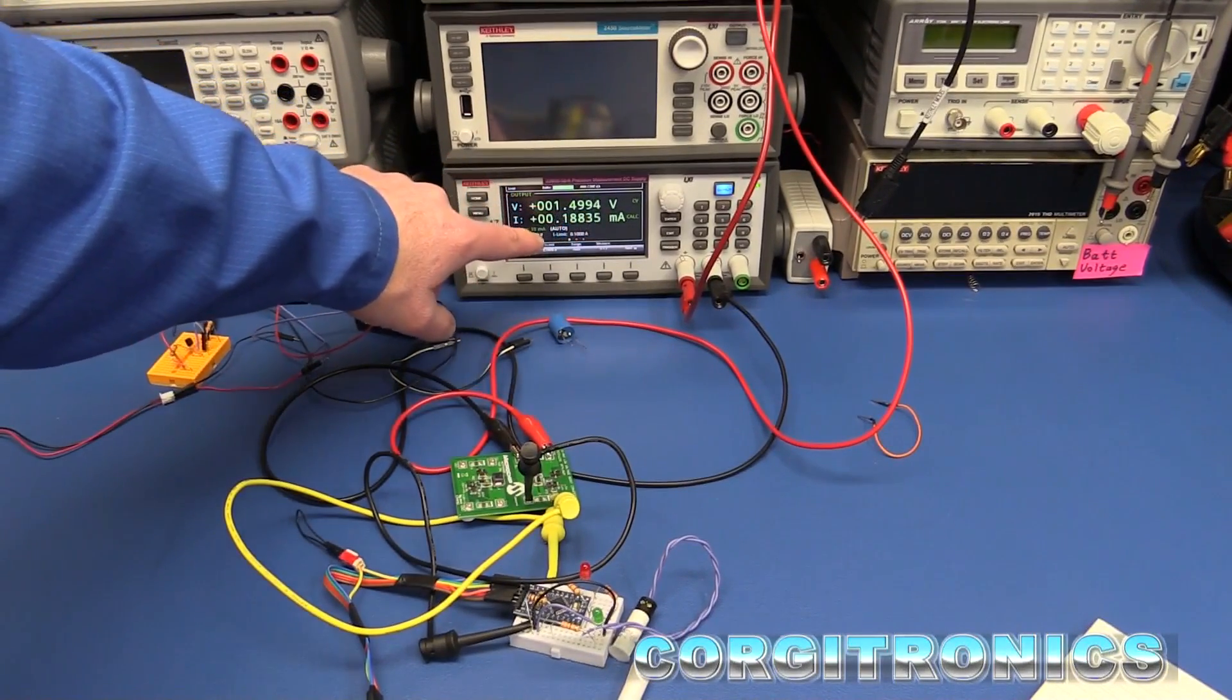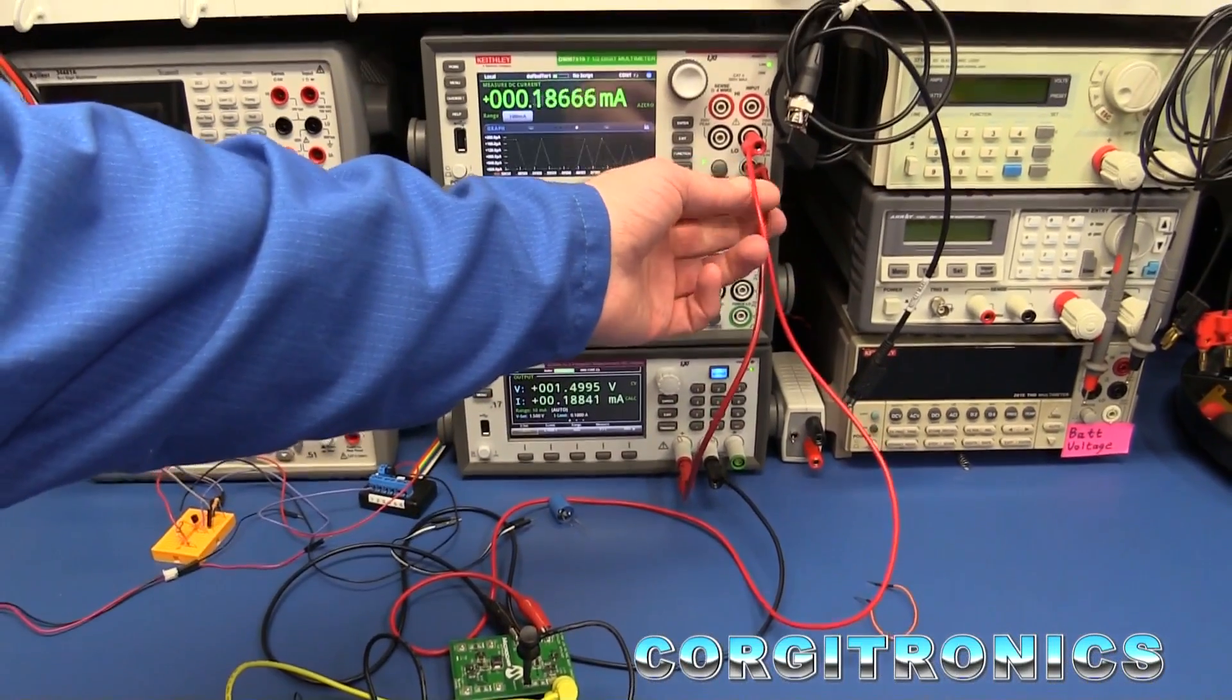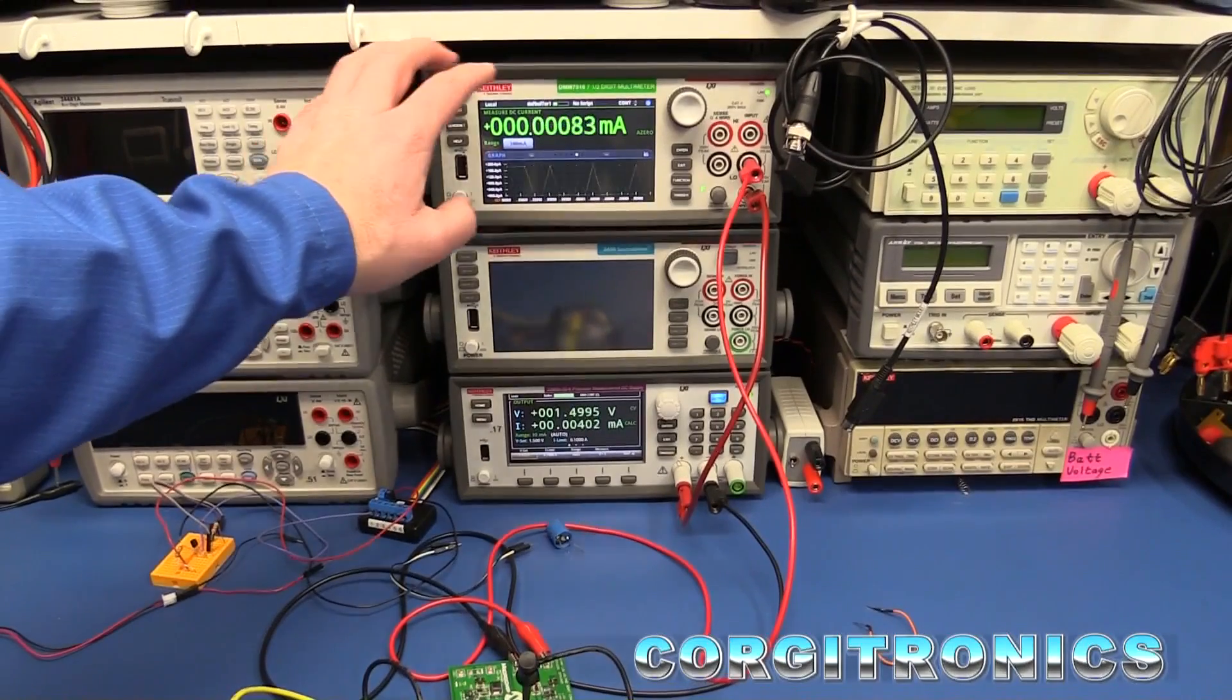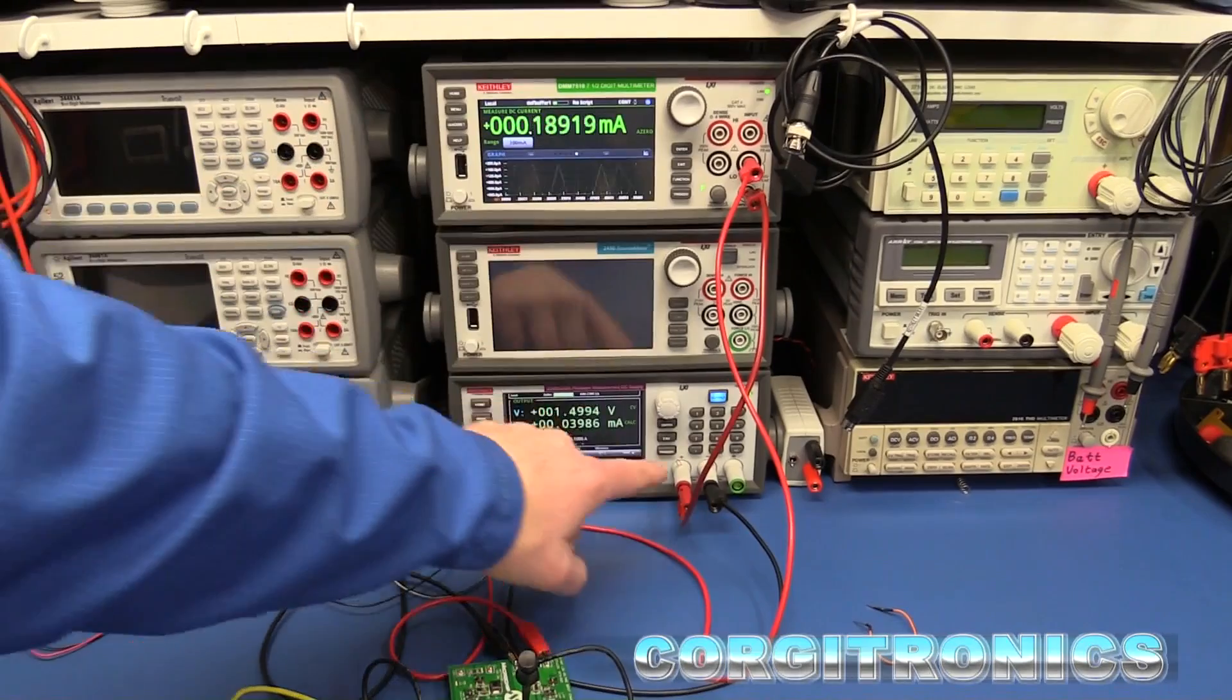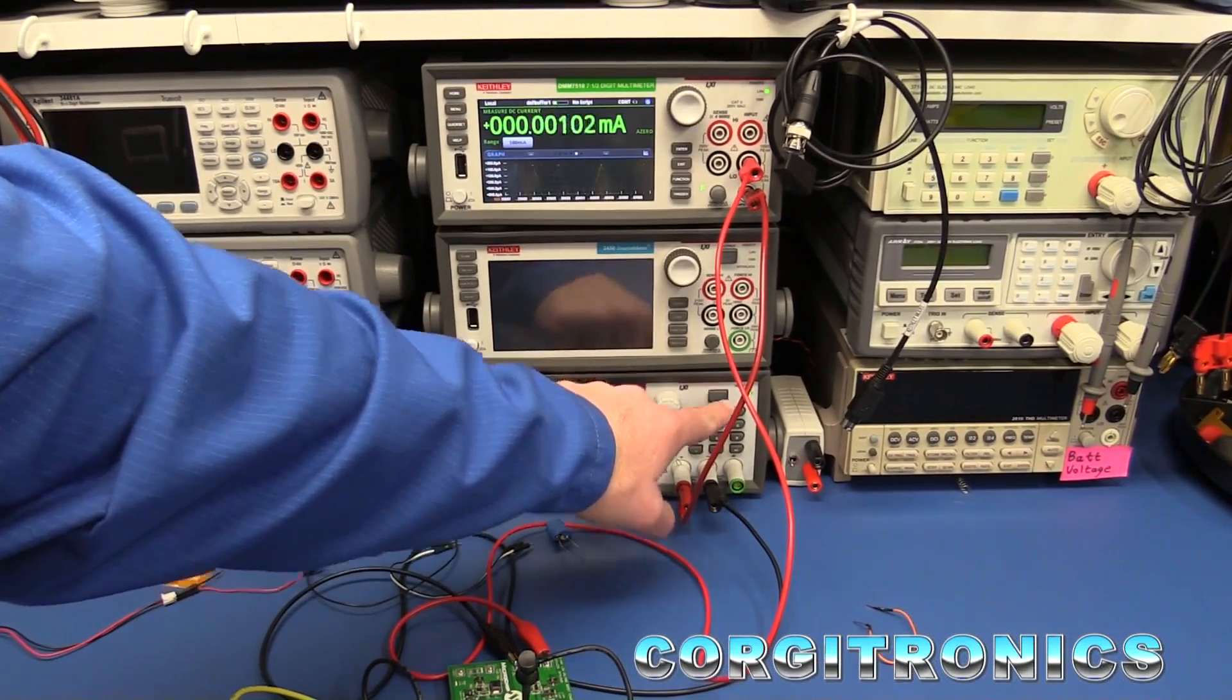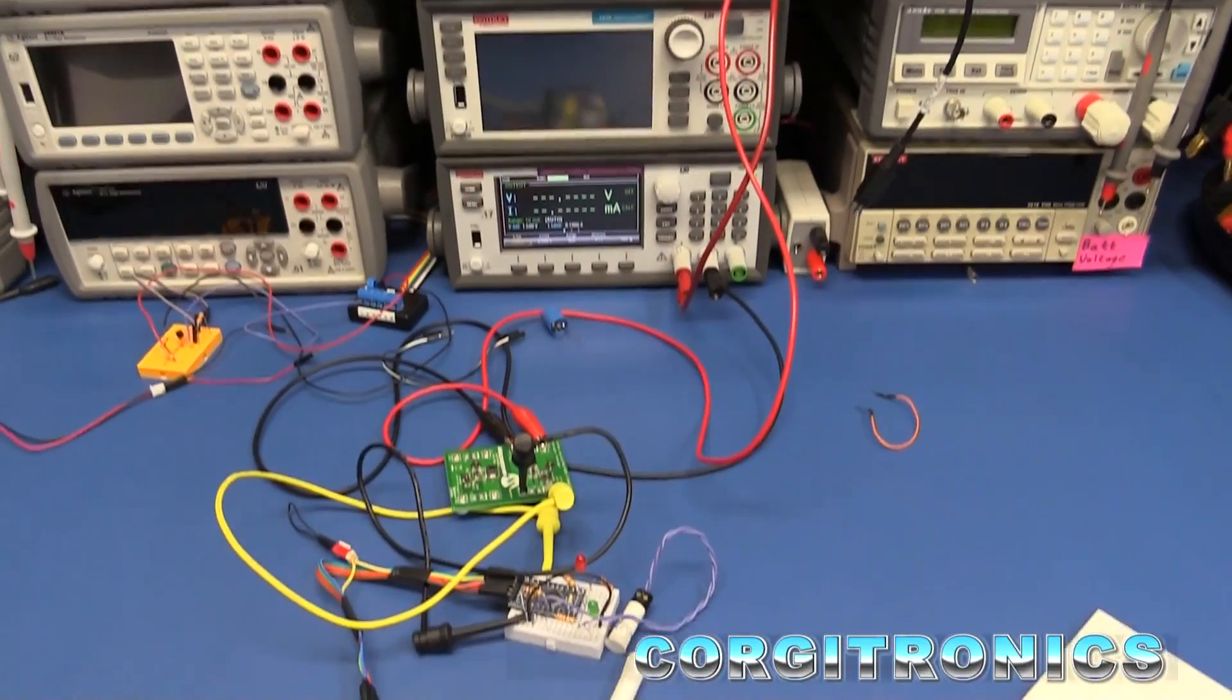The red and black wires coming into the boost converter are powered by the Keithley 2280S power supply set to 1.5 volts. And then the output of that is fed up to the high-speed meter, the DMM 7510, so we can look for peaks and monitor that very closely.